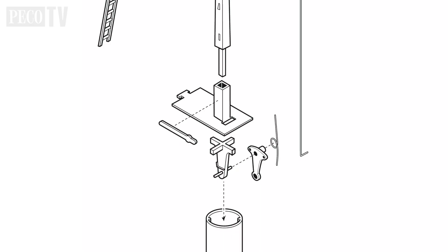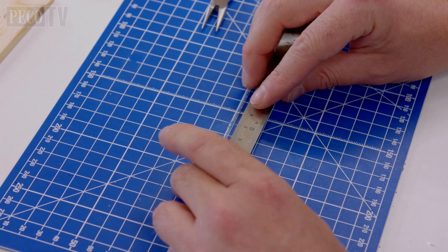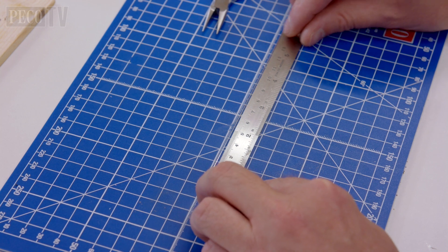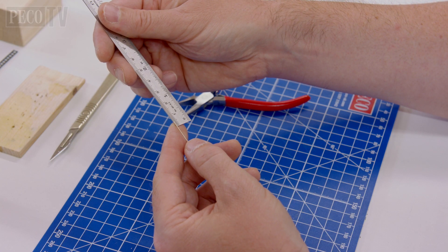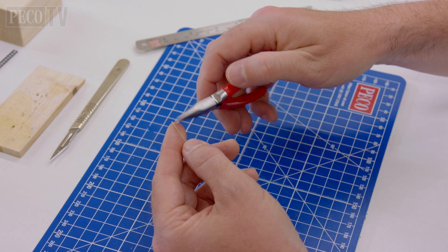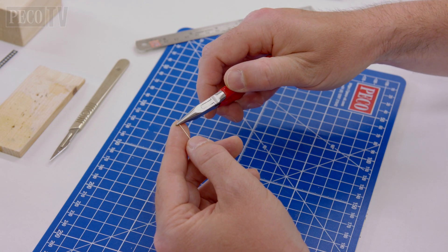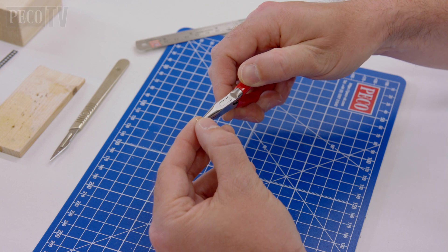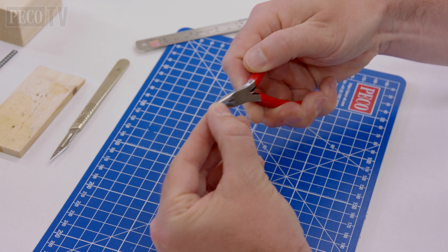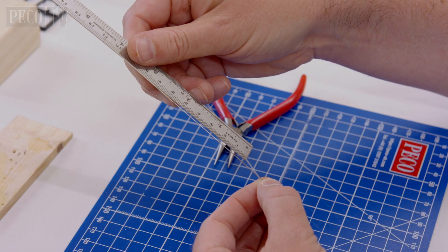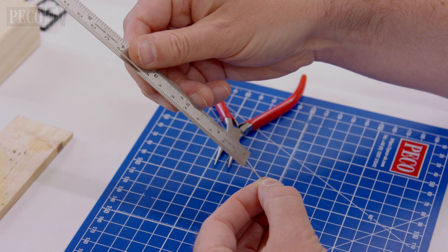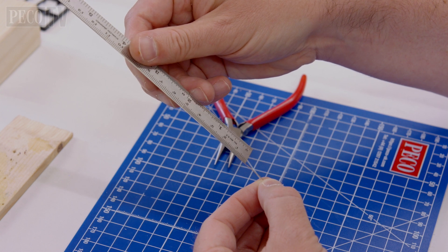Before cementing, ensure the direction of the pivot matches this diagram. Cut the wire to a length of 118mm. Then bend a 4mm 90 degree angle at one end. And at the second, a 4mm bend, paying attention again to the diagram to see the different angles. The length of wire between the two bends should be 110mm in length.